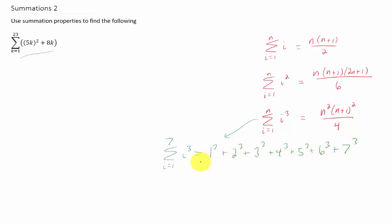If you want to know what that sum is, you could type this whole thing into your calculator. But imagine if this was 700 instead of 7 — that would be a lot of numbers to type. So we have these formulas, and the formula says: if our upper limit of summation is n, then this is what the sum adds up to. Our upper limit of summation here is 7.